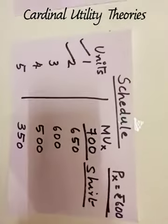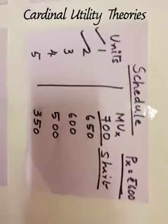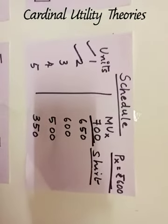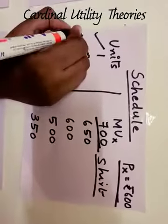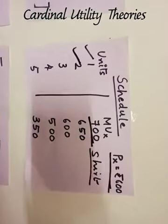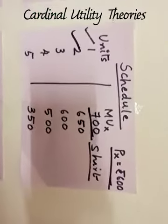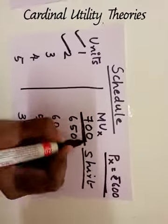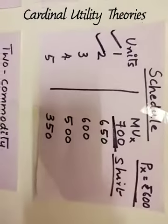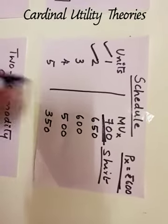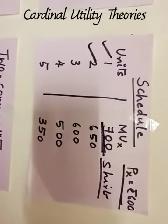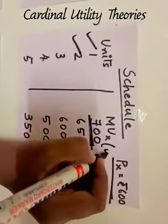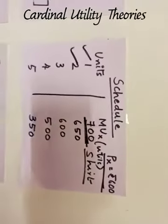MU goes on diminishing. When he is not having any dress to wear, he buys his first shirt and feels more utility. Buying the second shirt — say he gets his first salary in his life, he purchases his first shirt of his own, he will be so happy. That happiness is the utility, and that happiness will be more than anything else. So, 700 utils. Marginal utility is measured in utils.